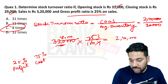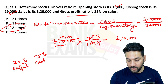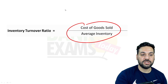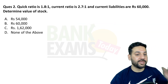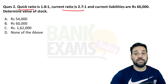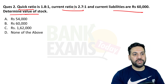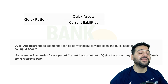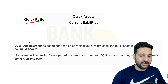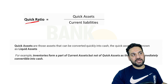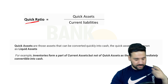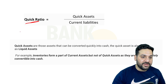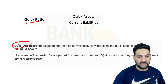Let's move on. For the quick ratio question, you are given the quick ratio, current ratio, and current liabilities, and you want to determine the value of stock. The formula: quick assets divided by current liabilities. The difference between quick assets and current assets is that quick assets exclude inventory.